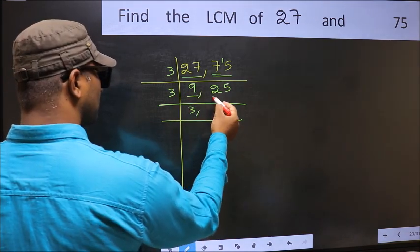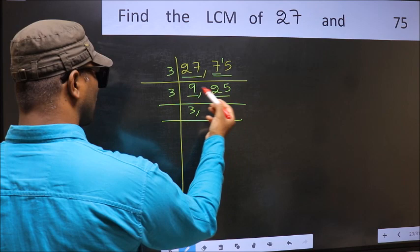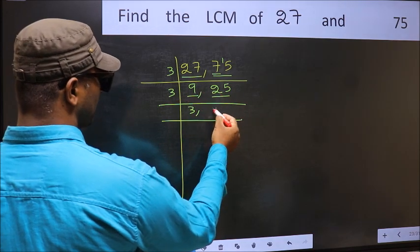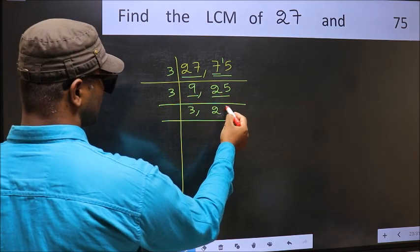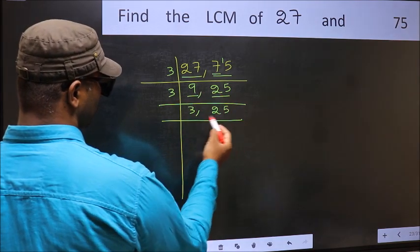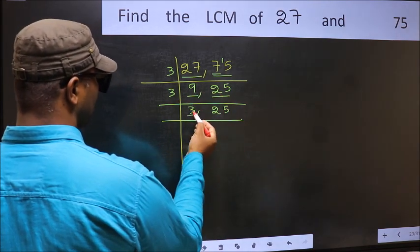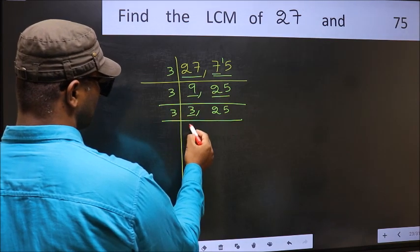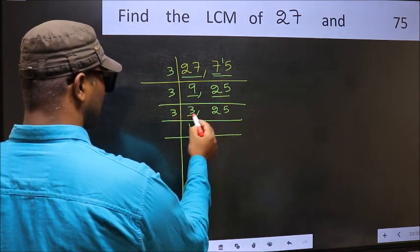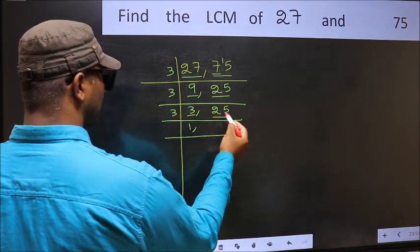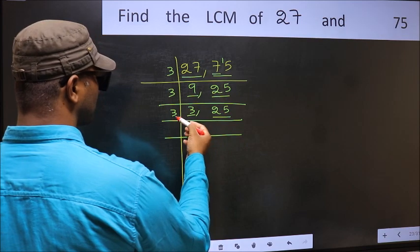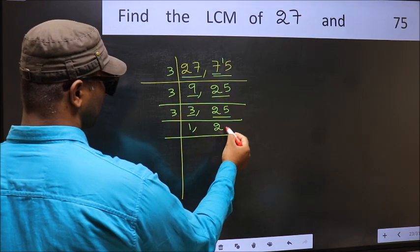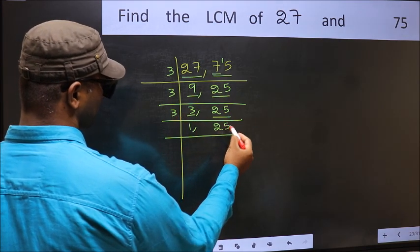The result for the first column is 9 and for the other number it is 25, which is not divisible by 3, so write it down as it is. Now here we have 3, which is a prime number. 3 divided by 3 is 1. The other number 25 is not divisible by 3, so write it down as it is.